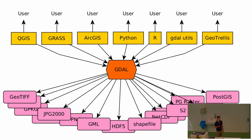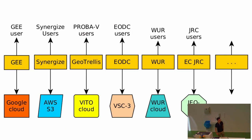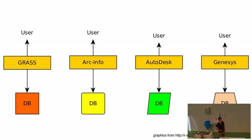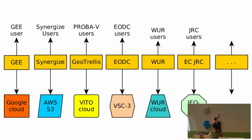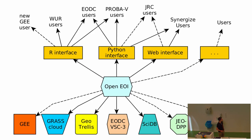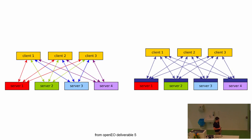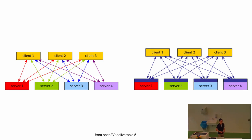The Earth observation cloud backend landscape today looks much like the pre-GDAL situation — different backends each with their own database. OpenEO thought: why not skip this mess and do it right in the first place? All backends share one abstraction layer — the OpenEO API — accessible by R, Python, and JavaScript clients. Instead of each client needing to speak every backend's language, there's just one language so every client can talk to any backend.